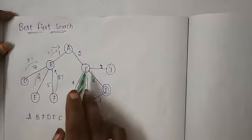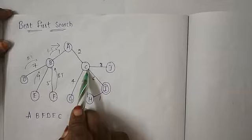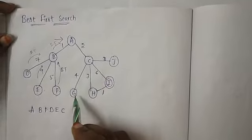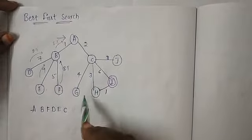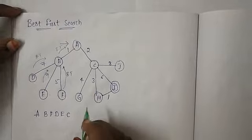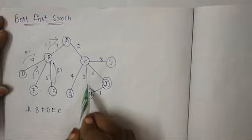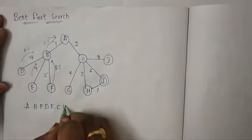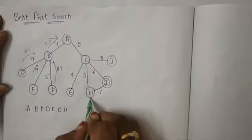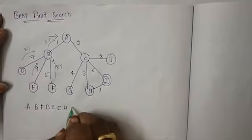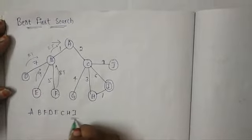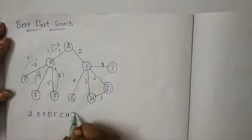E is also not having any child, so we will backtrack to B. Then we will backtrack to A. Now we will go to the right part, we will go to C. C's unvisited nodes are G, H, I, J. We will visit H. From H, we will reach I.